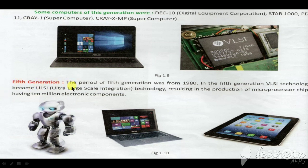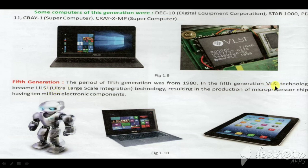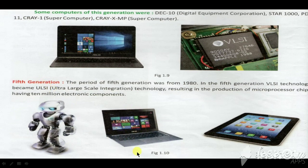Next is the Fifth Generation. Time period is 1980 to right now. Fifth generation uses VLSI technology and ULSI — Ultra Large Scale Integration — technologies. एक और technology यूज हुई जिसका नाम है AI — Artificial Intelligence। यानि कि इस generation का computer natural language को follow करता है। इसकी size, capacity, और power excellent हैं। Robotics, smart phones, smart TVs, और smart devices सभी fifth generation में आते हैं।